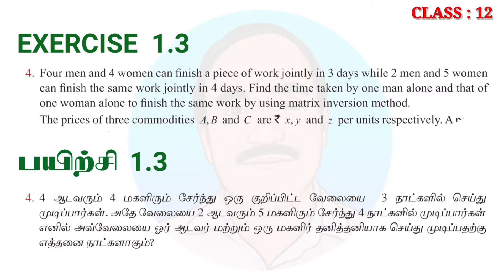Take a simple example: if one person can finish work in 10 days, then their one day work is 1 by 10. Similarly, if one person finishes in 20 days, their one day work is 1 by 20. If one person does 3 by 4 of the work, then the time taken is 1 by 3. That is the concept.